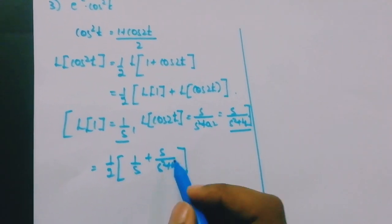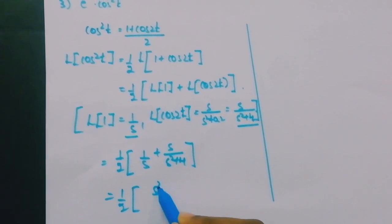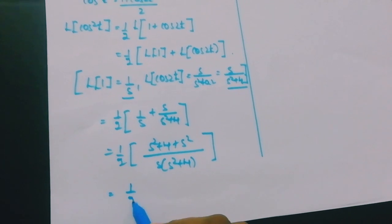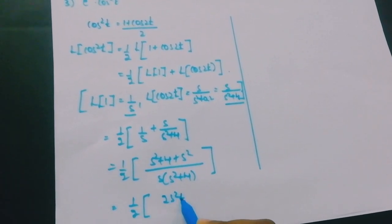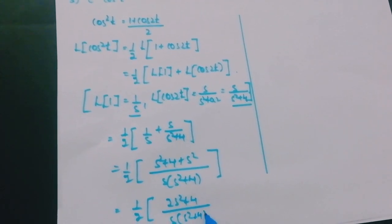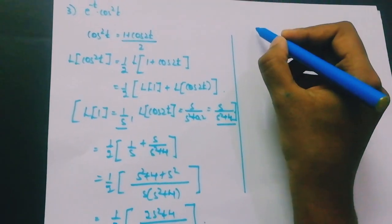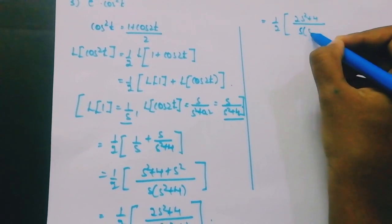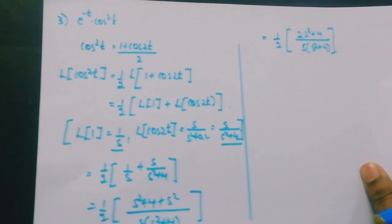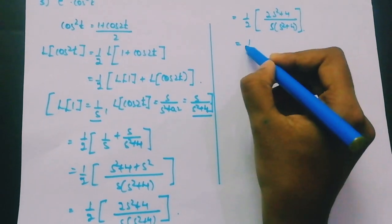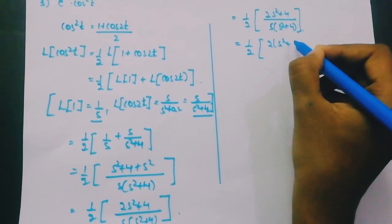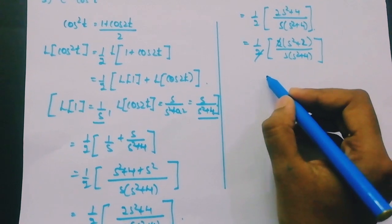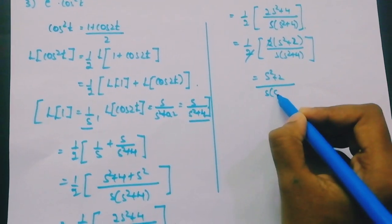So L{cos²(t)} = (1/2)[1/s + s/(s²+4)]. After cross multiplication: (1/2)·[(s²+4 + s²)/(s·(s²+4))] = (1/2)·[(2s²+4)/(s·(s²+4))]. Taking 2 in common: (1/2)·2·(s²+2)/(s·(s²+4)) = (s²+2)/(s·(s²+4)).